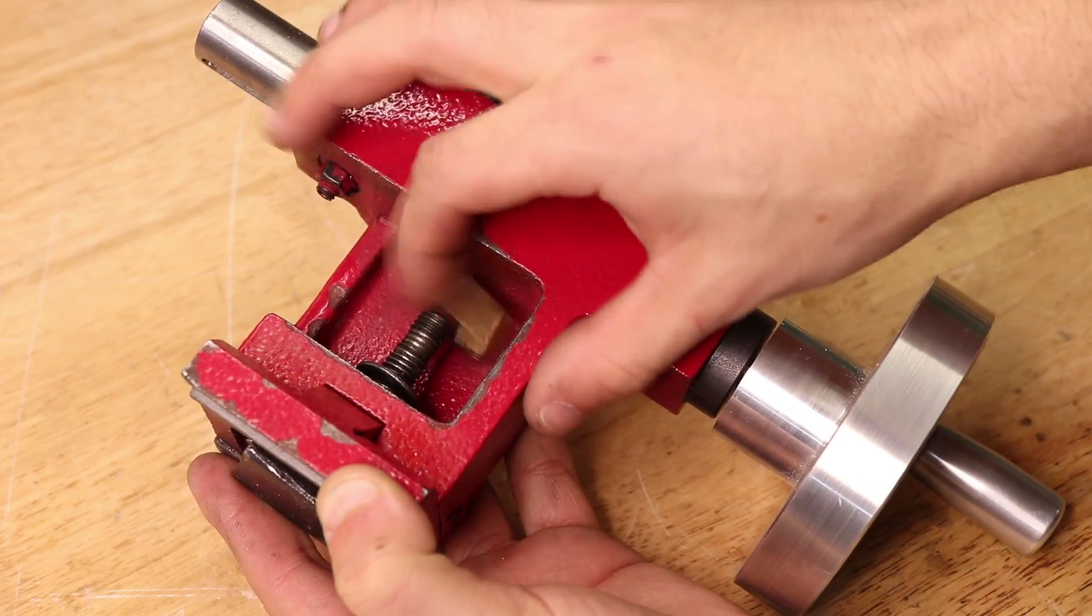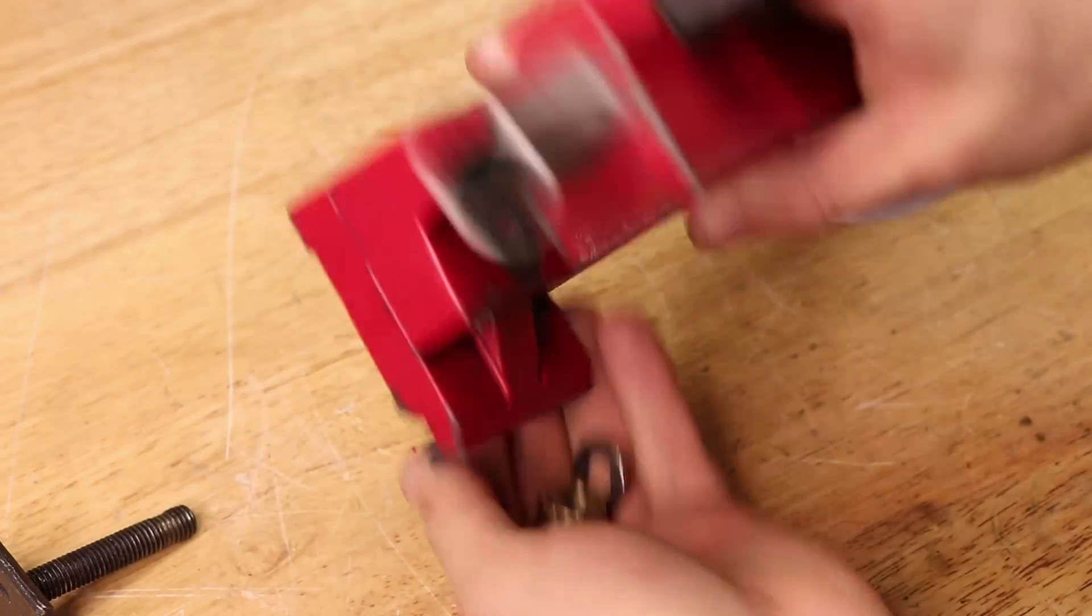So my plan is to upgrade the tailstock to have a quick locking lever, and to do this I'll need to disassemble the tailstock.